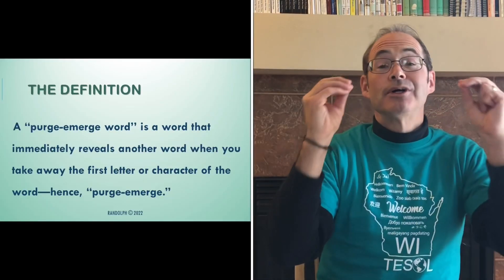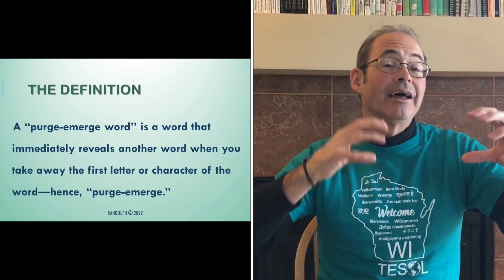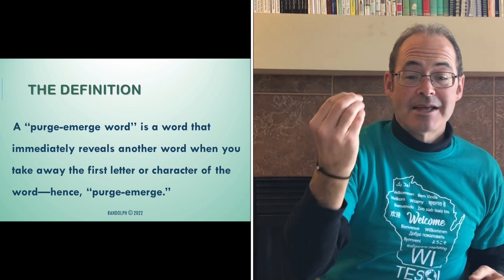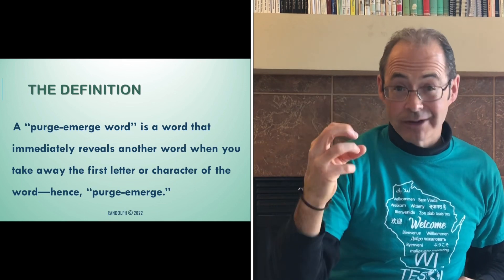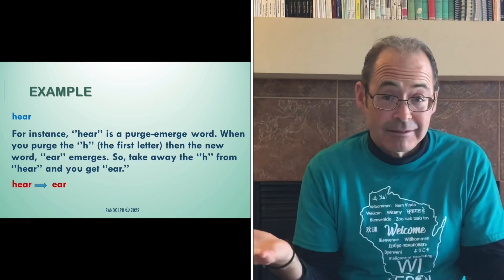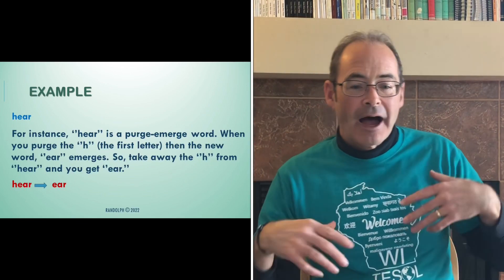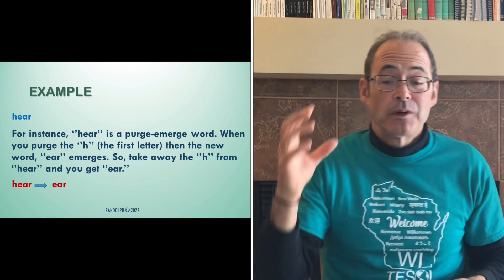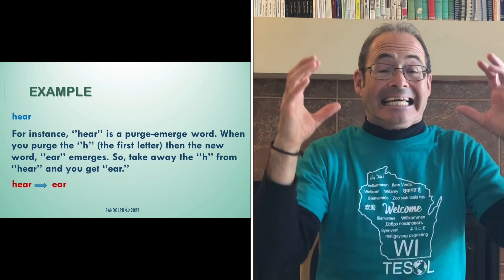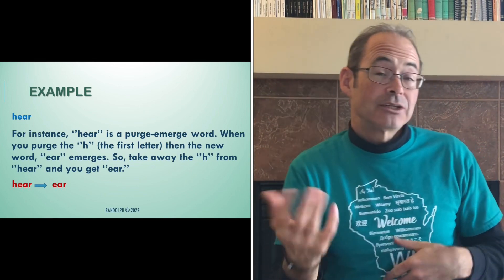You're probably asking, what is a purge-emerge word? So I'm going to give you a definition — this is a definition I've created. A purge-emerge word is a word that immediately reveals another word when you take away the first letter or character of that word. Hence, purge-emerge. Here is an example: H-E-A-R. Here is a purge-emerge word because when you purge the H, the first letter of the word, 'ear' emerges. Take away the H from 'hear' and you get 'ear.' What's interesting about these words is the associations they elicit and the connections they highlight — you actually hear with your ear. These words have a very intimate relationship.